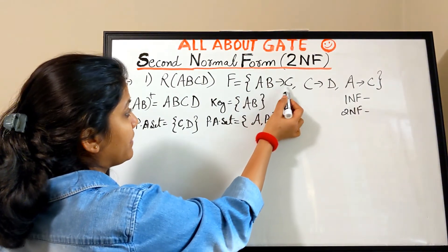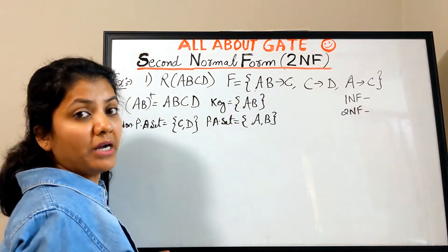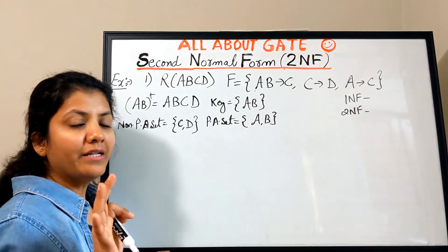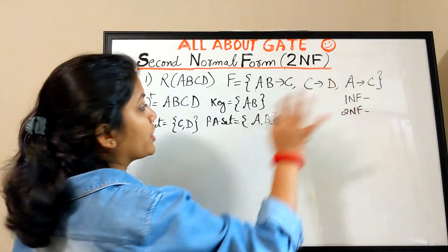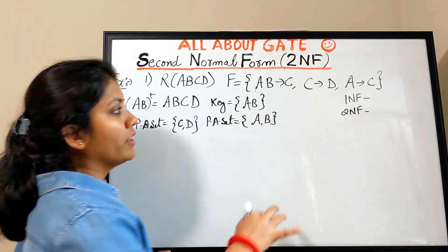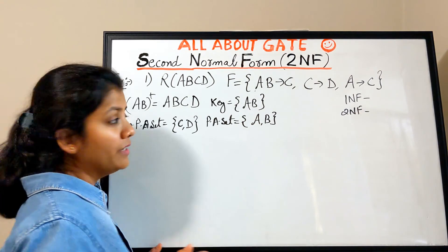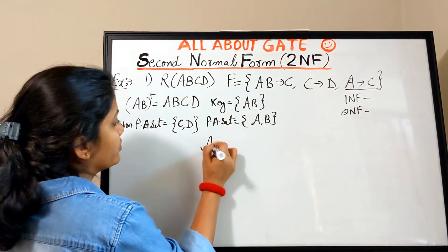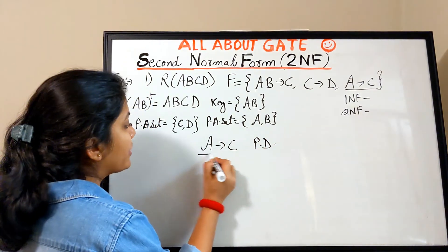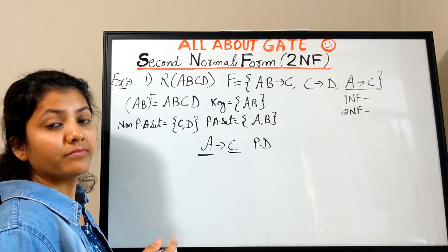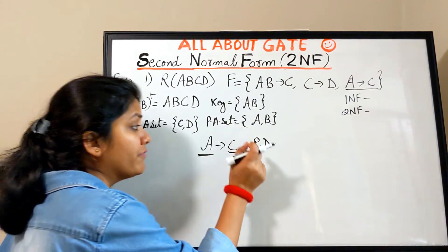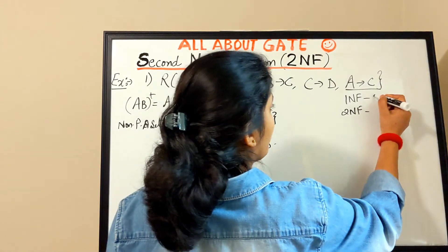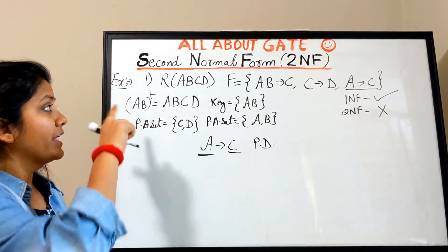Checking FDs: AB→C — AB is the key itself, so this is not a partial dependency. C→D — C is non-prime and D is non-prime, so this is non-prime determining non-prime, not relevant to partial dependency for now. A→C — A is a prime attribute and C is a non-prime attribute, so A→C is a partial dependency: part of the key determines a non-prime attribute. Since partial dependency exists, this relation is not in 2NF — it is in 1NF.